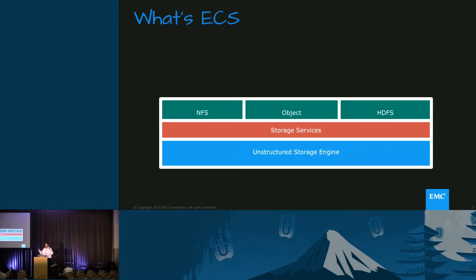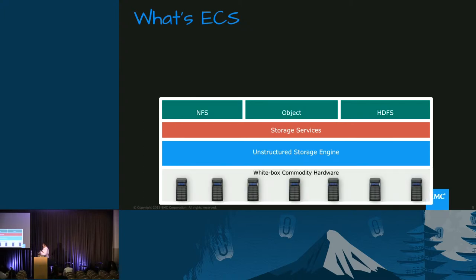Encryption applies to all, metadata search can apply to all, and the capabilities the storage engine provides apply to all. It's very unique that it's not just file on top of object or HDFS on top of object — it's actually a first-class citizen with object. We've added all that on white-box commodity. ECS is a software-only solution that can also be provided as an appliance or deployed on customer hardware. The appliance is just white-box commodity x86 servers with some JBOD disks.